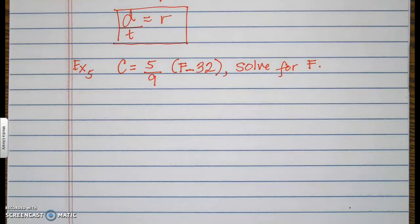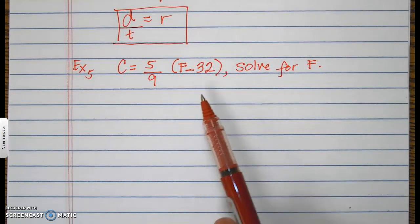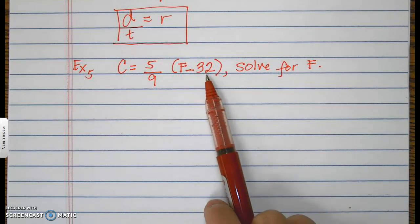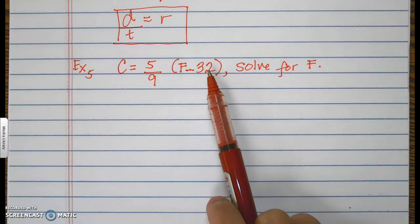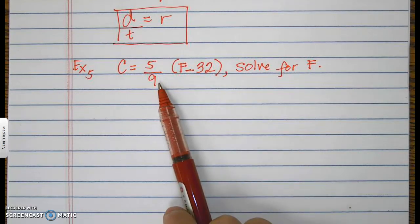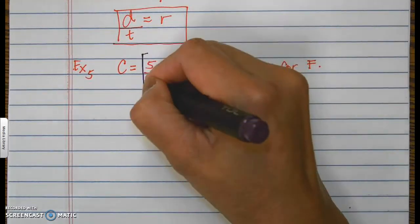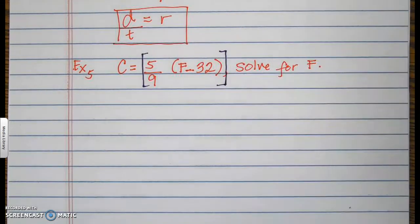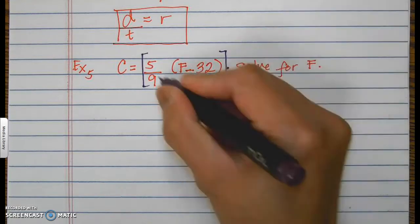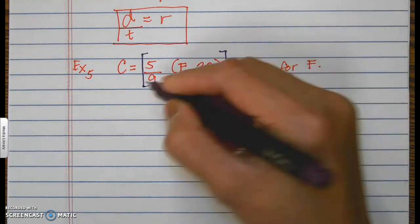Example number 5: C equals 5 over 9 times parentheses f minus 32, close parentheses. Solve for f. The first thing to remove is the one farthest from f. Negative 32 is inside the same parentheses as f, so that's the last thing to remove. Remove 5 over 9 by multiplying by its reciprocal, which is 9 over 5.